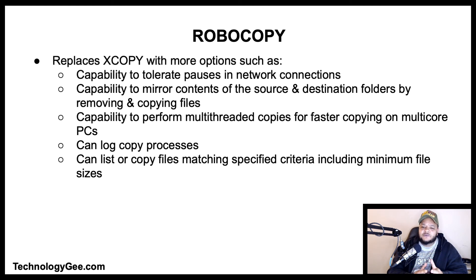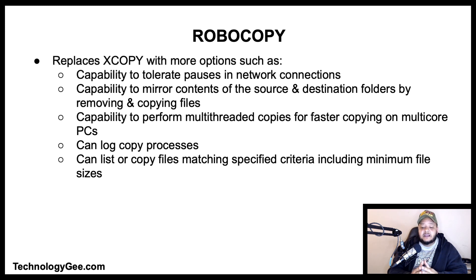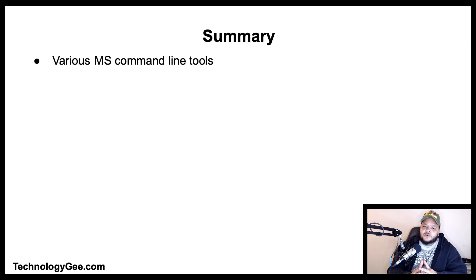Robocopy functionally replaces xcopy with more options. It has the capability to tolerate pauses in network connections, mirror contents of source and destination folders by removing and copying files, perform multi-threaded copies for faster copying on multi-core PCs, log copy processes, and list or copy files matching specified criteria including minimum file sizes.